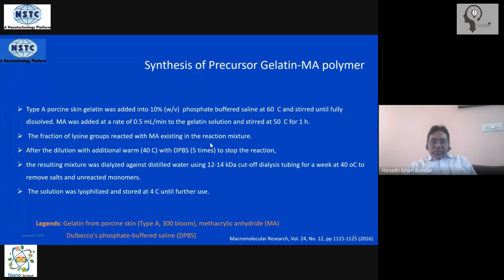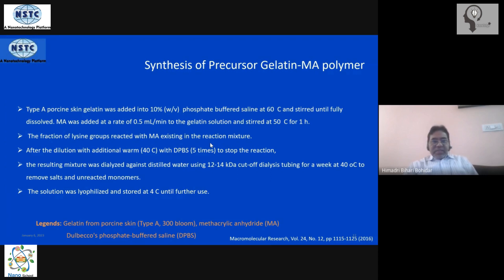To summarize, the two key steps are: first, conjugate methacrylic anhydride to gelatin by mixing them at the specified concentration at 60°C, allowing the reaction to proceed for about an hour. Then stop the reaction by heavily diluting with DPBS. Next, perform dialysis using a membrane with a molecular weight cut-off of 10–15 kDa to remove salts, unreacted monomers, and surfactants. Finally, lyophilize at 4°C and store for future use.